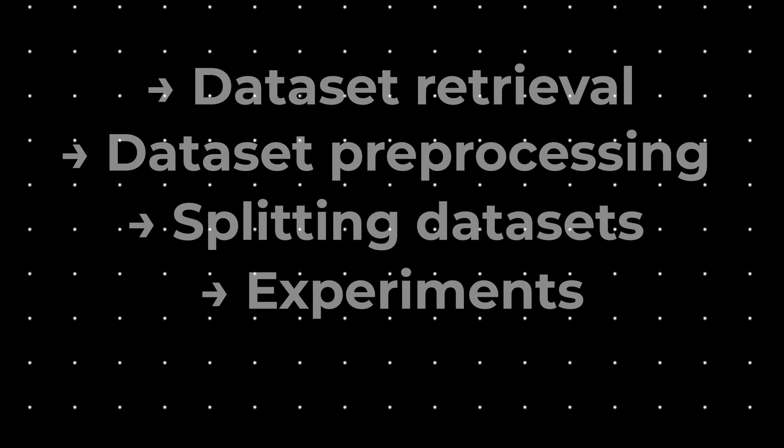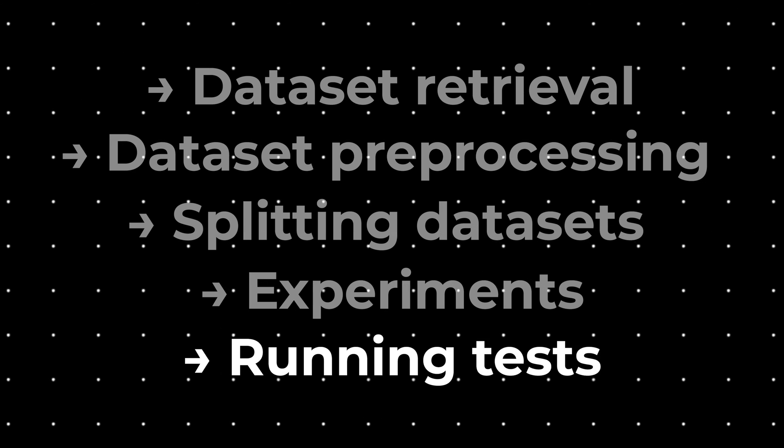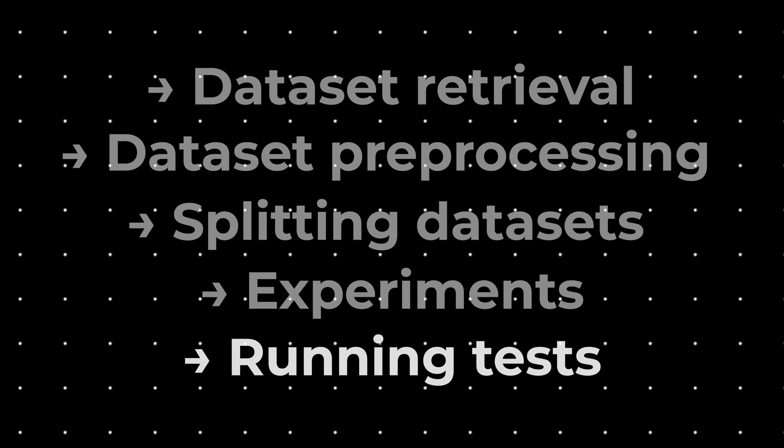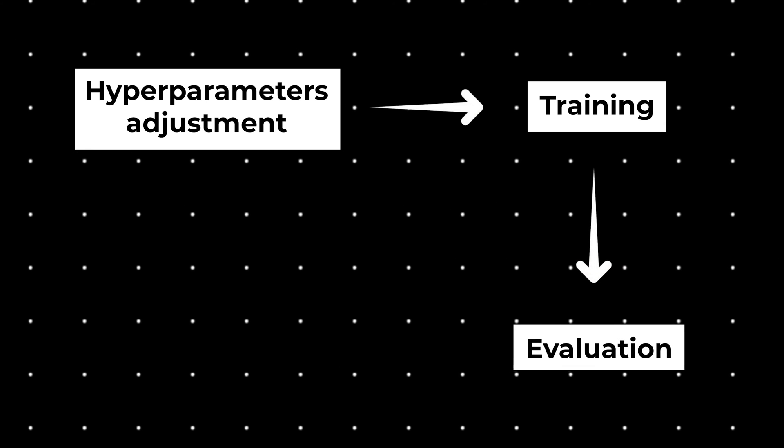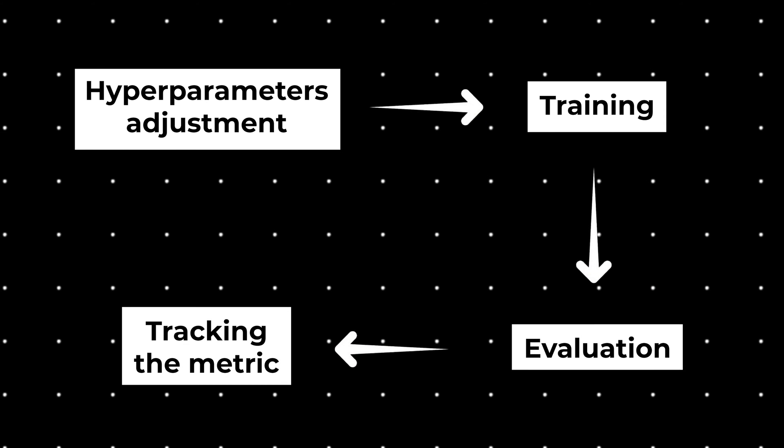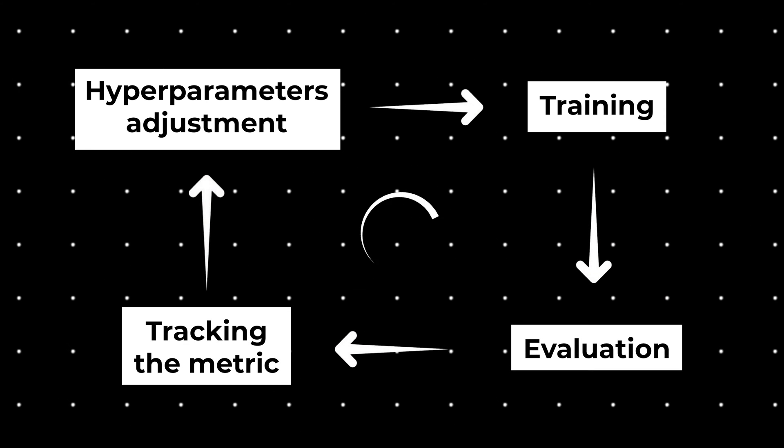The next step is running tests or training loops. The loop includes these steps: hyperparameters adjustment, training, evaluation, tracking the metric, and repeating the loop. This produces a set of experiment results in the form of tracked metrics for each combination of hyperparameters and model architectures.